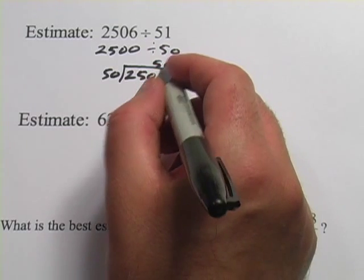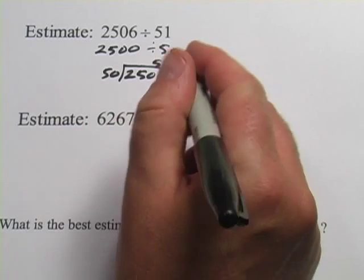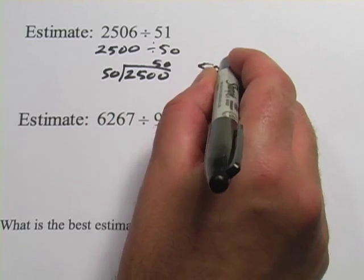If you think about 5 times 5 is 25, so 50 times 50 would be 25 with two extra zeros on it. So the answer for this one, the estimate, would be 50.